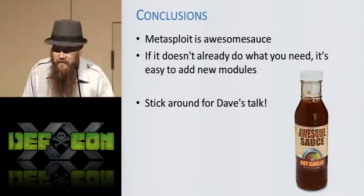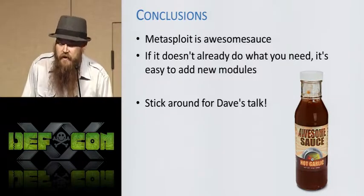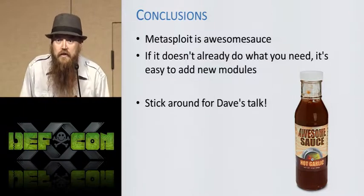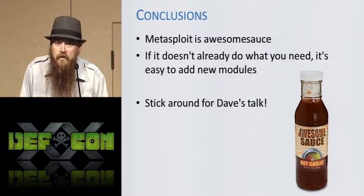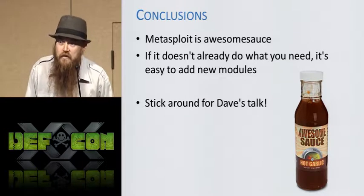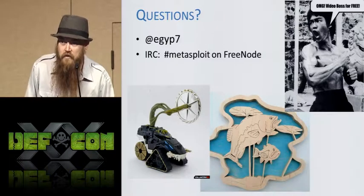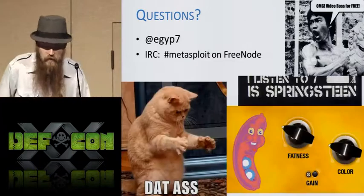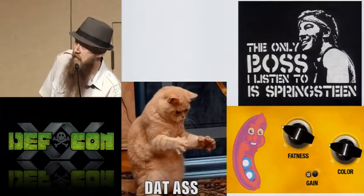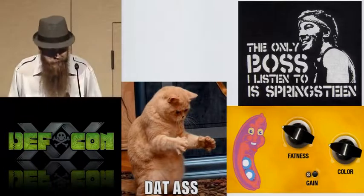Metasploit is awesome sauce. If it doesn't already do something that you need, it's relatively easy to add your own stuff. The module structure is simple — the amount of Ruby necessary to write new modules is minuscule. If you've written any other scripting language, you can learn the Ruby necessary to write a module in an afternoon. If you're interested in more post-exploitation, stick around for Dave Maloney's talk coming up next. Thank you.